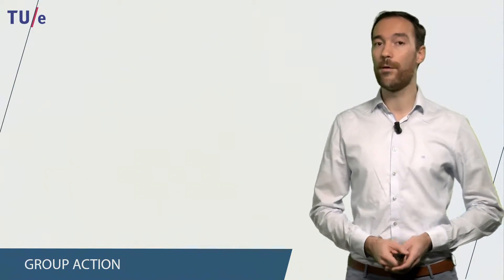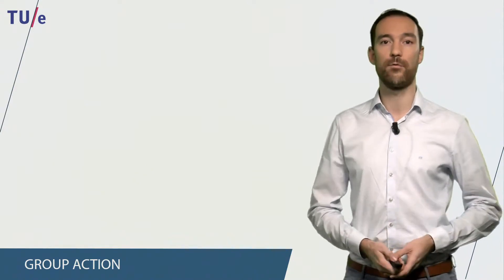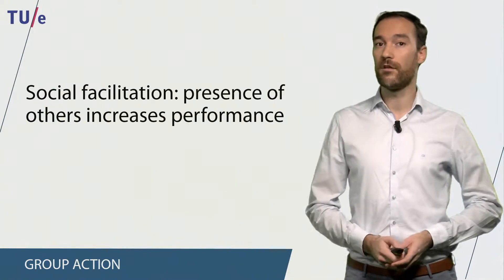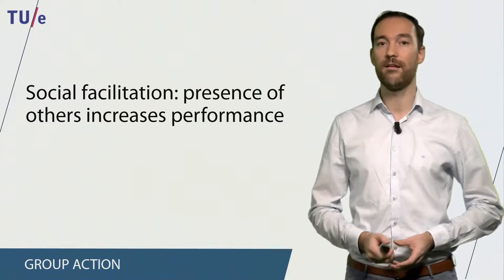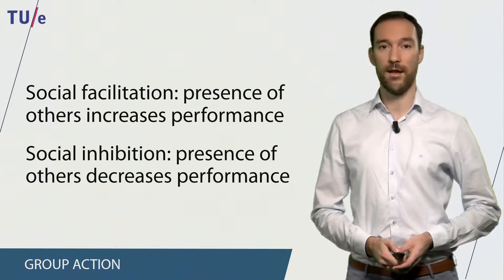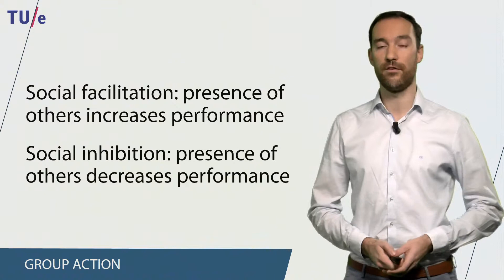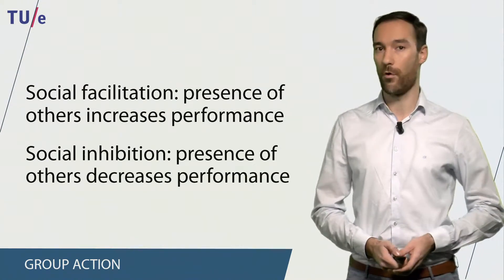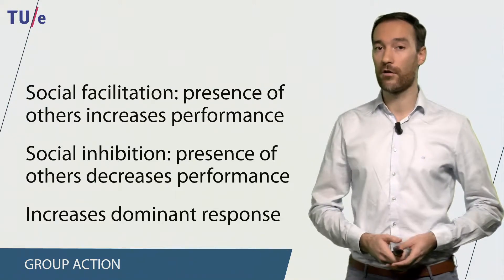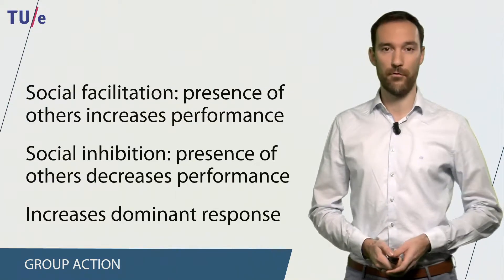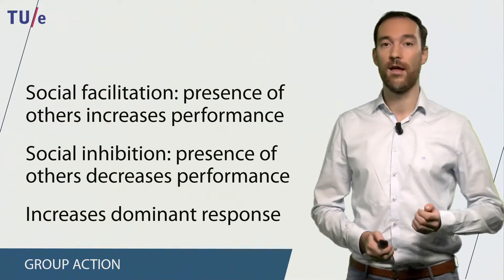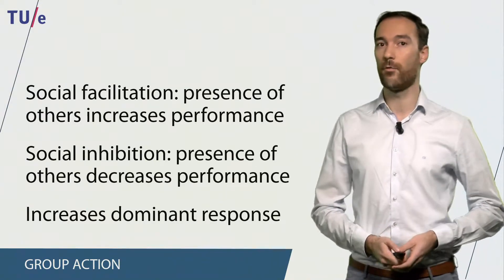Many things can explain how people behave in groups, and we can define them in theories. The first one is social facilitation, which means that the presence of other people increases our performance on simple tasks. This is opposite to social inhibition, in which the presence of other people decreases our performance on complex tasks. The key issue is that the presence of others increases our dominant response, which is more likely to be correct on simple tasks and more likely to be false on complex tasks.